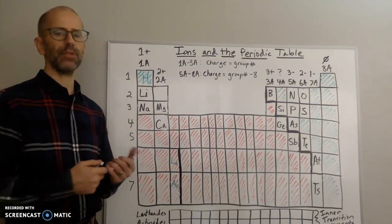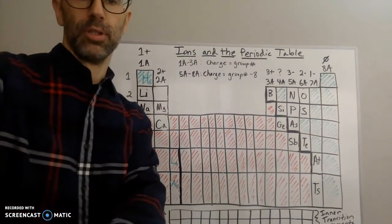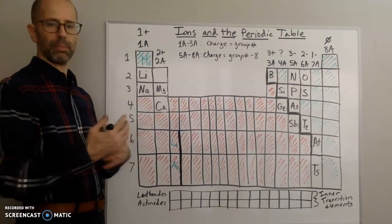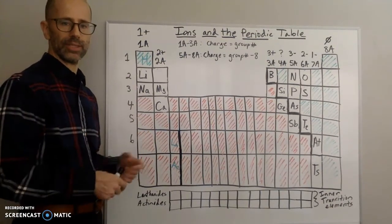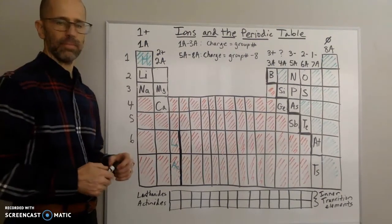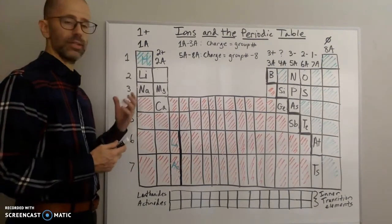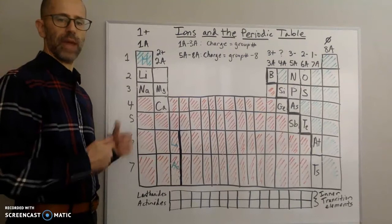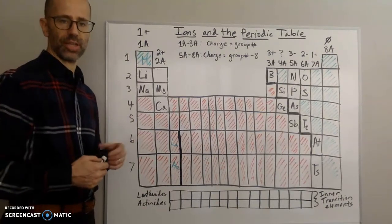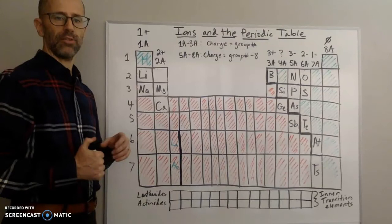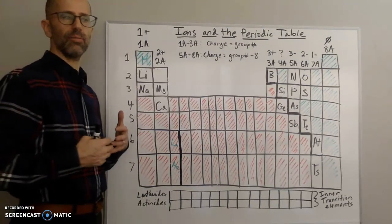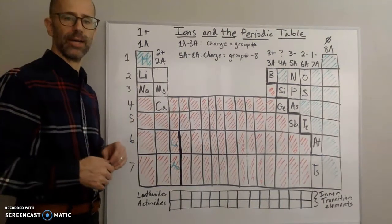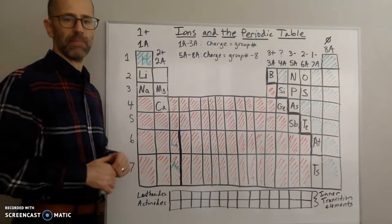In the last video I introduced you to the periodic table, its periodic nature, and its organization. Today I'm going to talk a bit about its periodicity — there's a pattern, and this pattern is now going to be related to the charges on the ions. There's a way you can use the periodic table to identify the charge on a particular ion if you know the pattern.